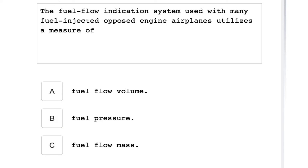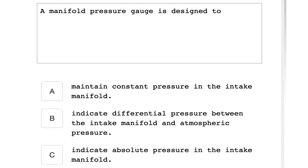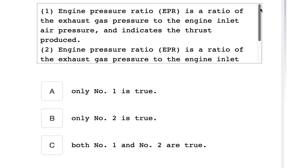The fuel flow indication system used with many fuel injected opposed engine airplanes utilizes a measure of fuel pressure. A manifold pressure gauge is designed to indicate absolute pressure in the intake manifold.